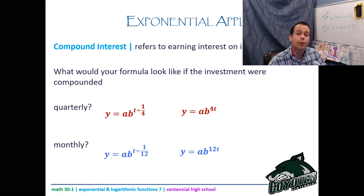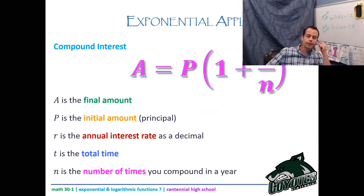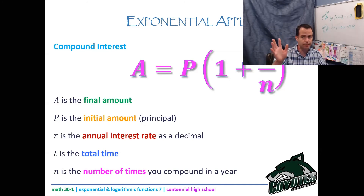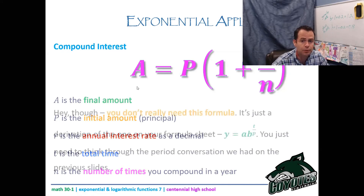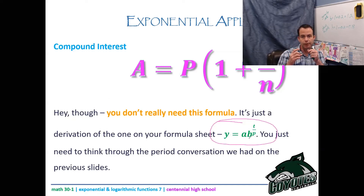Here's the compound interest formula: A = P · (1 + r/n)^(nt), where A is the final amount, P is the principal (initial amount), r is the annual interest rate as a decimal, t is total time in years, and n is the number of times you compound per year. This formula is NOT on your formula sheet — but you don't need to memorize it if you understand the original formula.